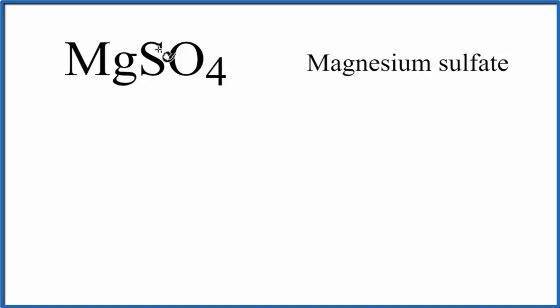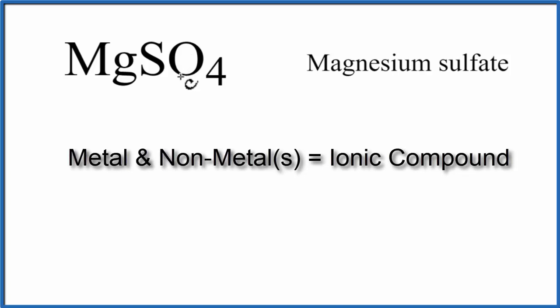So we have our metal and then a group of non-metals. It's called a polyatomic ion, and SO4 is the sulfate ion. When we have a metal and a group of non-metals, that's an ionic compound.